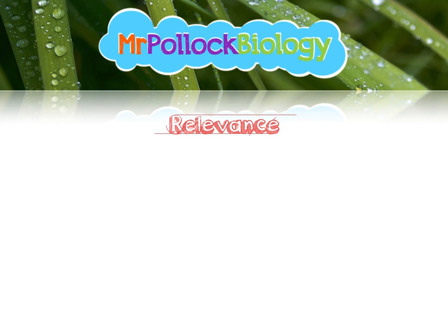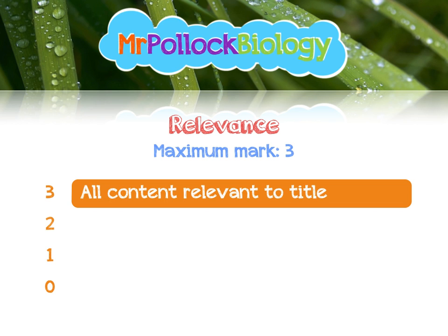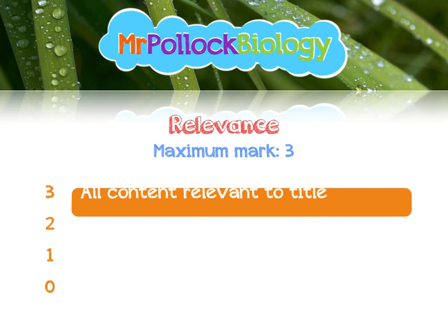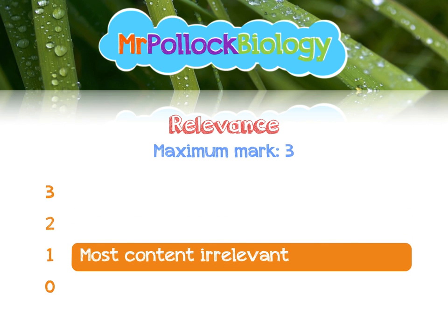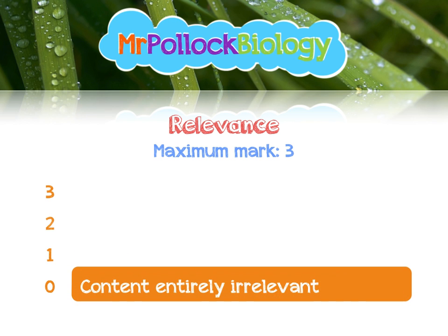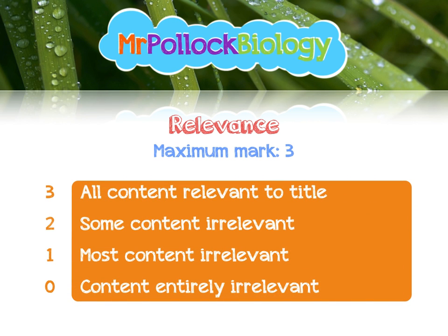The third area they're going to look at is relevance, and this is about how much of your content actually relates to the title of the essay. If all of your content is relevant and you haven't waffled or gone off on a tangent, they're going to give you three. Two means some of the content they deem irrelevant — you might have gone off on a minor tangent. One mark means most of the content is totally irrelevant, and zero is if the whole thing is just completely off-topic. Three marks maximum for relevance, and that's the way the marks break down.